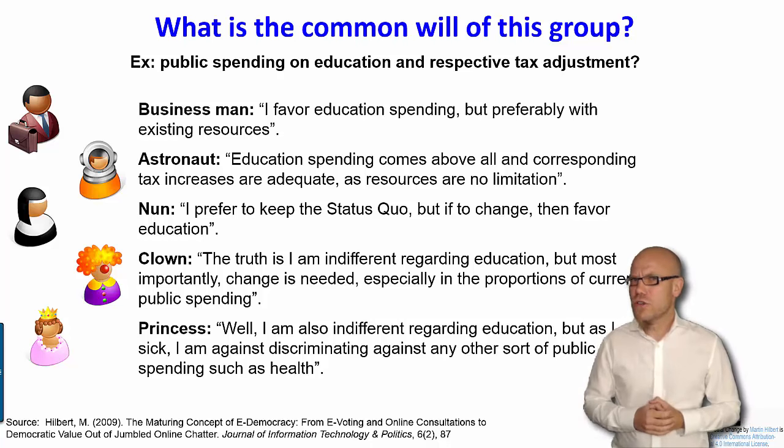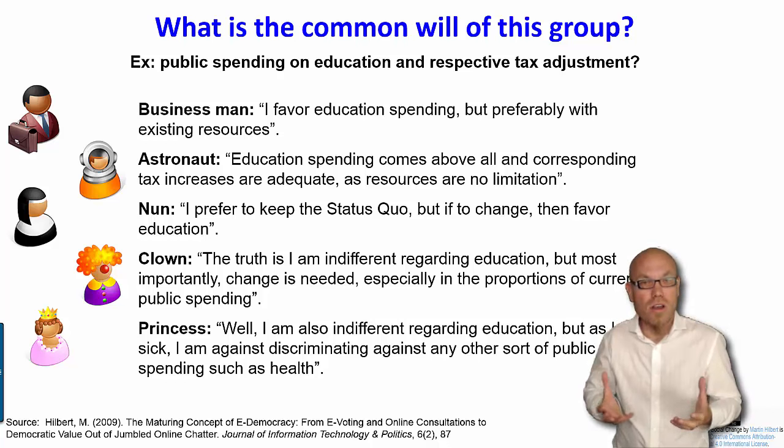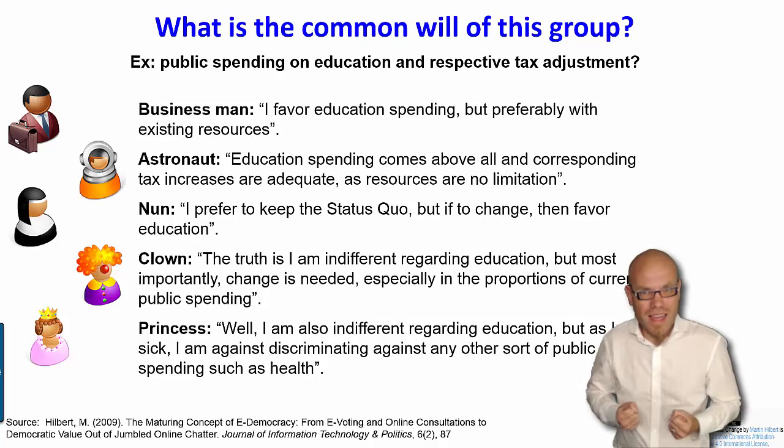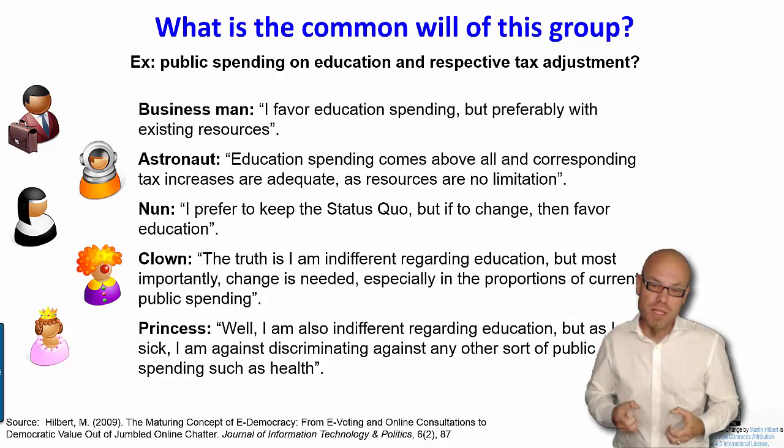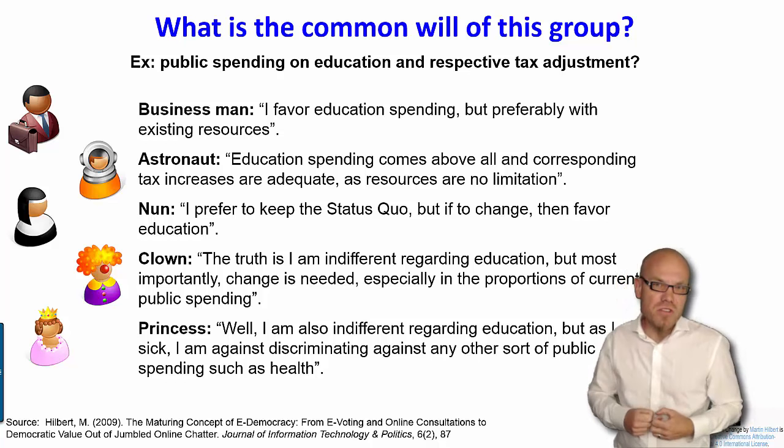So now we have our society, five opinions. What will you now do about spending and the respective tax adjustments? We have a lot of information here and the idea of democracy is finding out what do these people actually want. They now express their will. One solution would be we create a representative democracy and let them talk among each other. That would be one extreme. The other extreme would be we just let them vote.